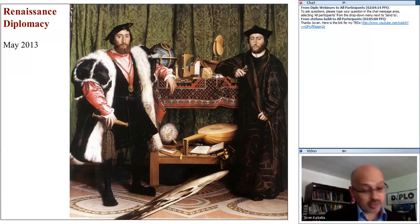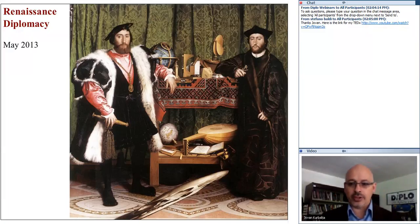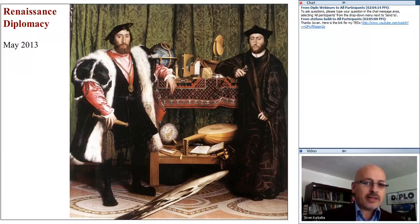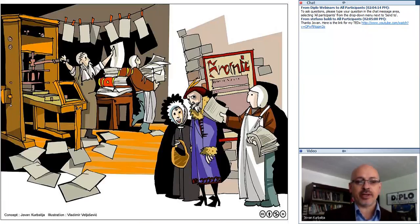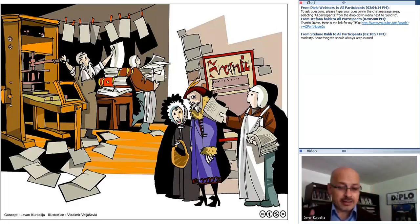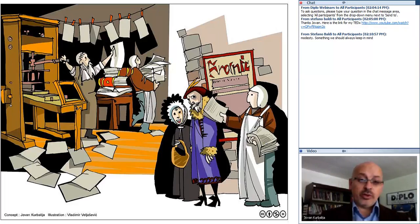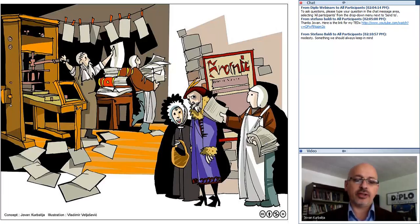The painting describes the context and spirit in which Renaissance diplomacy developed. The second element is a drawing representing the major invention of that era: the invention of the printing press around 1450 by Gutenberg in Germany. That was the tool that laid the basis for developments later in the 16th and 17th centuries.